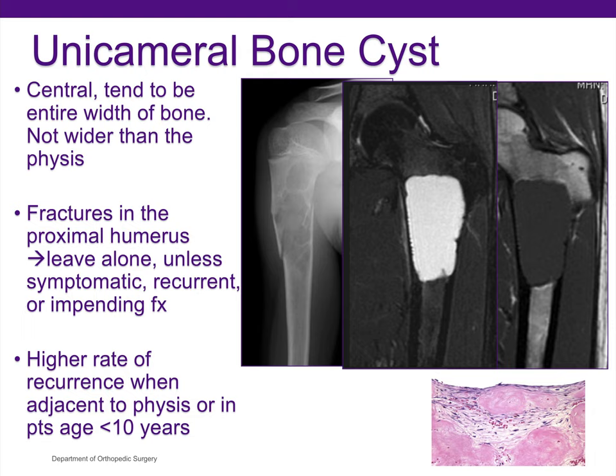There is a higher rate of recurrence in patients who are under the age of 10 years old and those with lesions adjacent to the physis — these are called the active unicameral bone cysts. Patients who are under 10 years old with lesions adjacent to the physis have a higher risk of local recurrence.